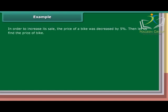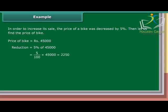In order to increase its sale, the price of a bike was decreased by 5%. Let us find the price of the bike now. Price of bike is Rs. 45,000. Reduction equals 5% of Rs. 45,000, which equals Rs. 2,250. New price equals Rs. 45,000 minus Rs. 2,250, which equals Rs. 42,750.